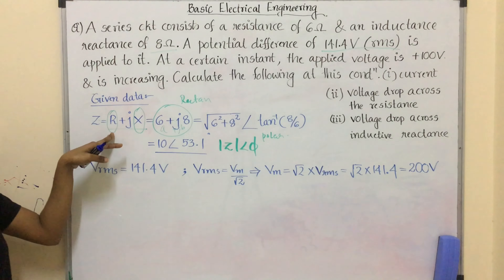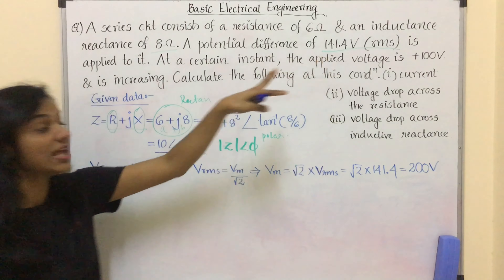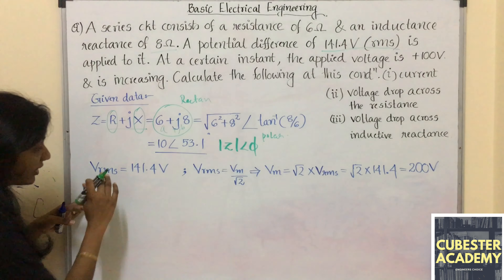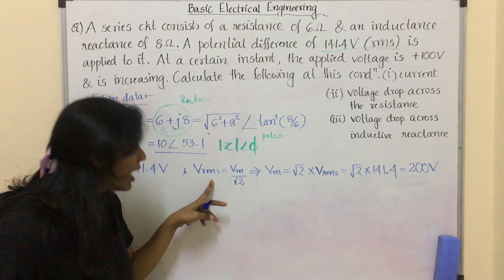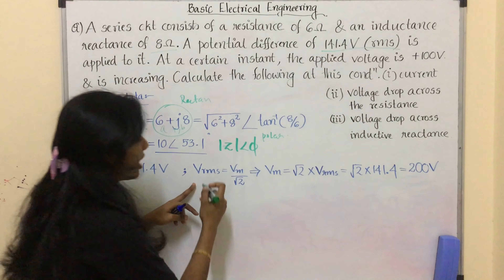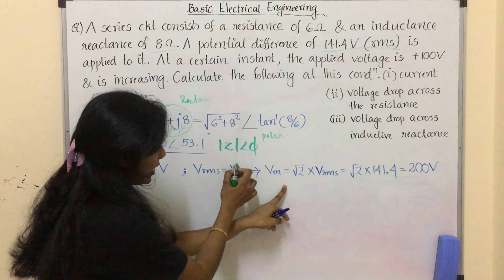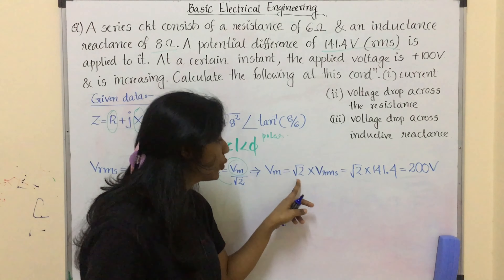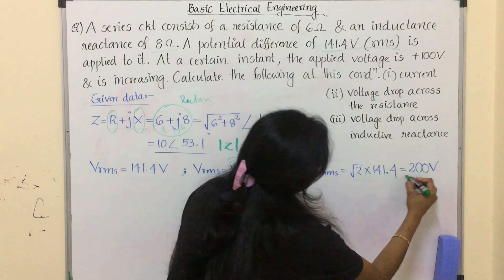The applied voltage is given as V_RMS = 141.4 volt. We know that V_RMS = Vm / √2, so Vm = √2 × V_RMS = 200 volt. This is the maximum value.